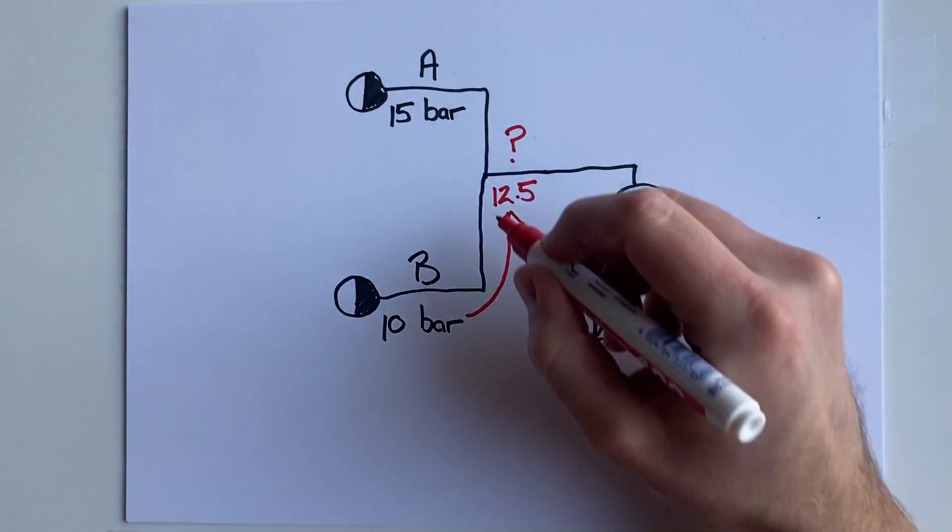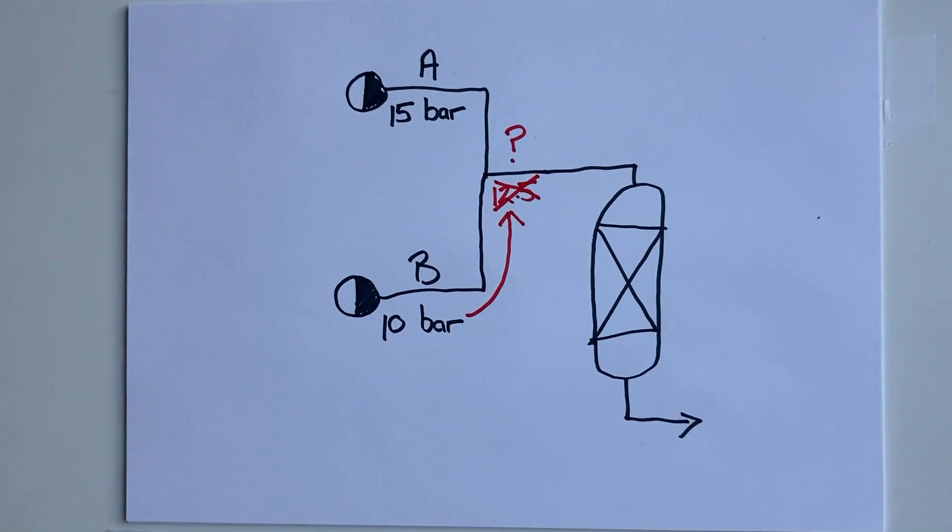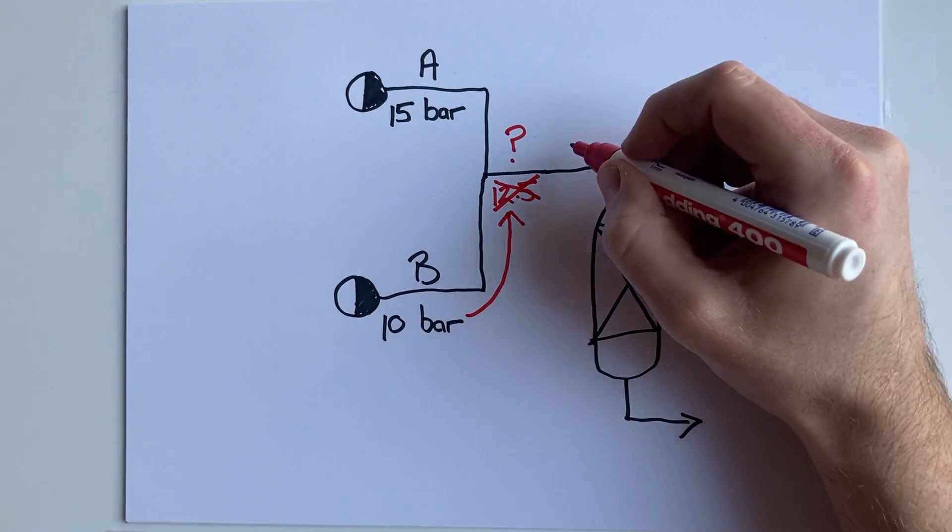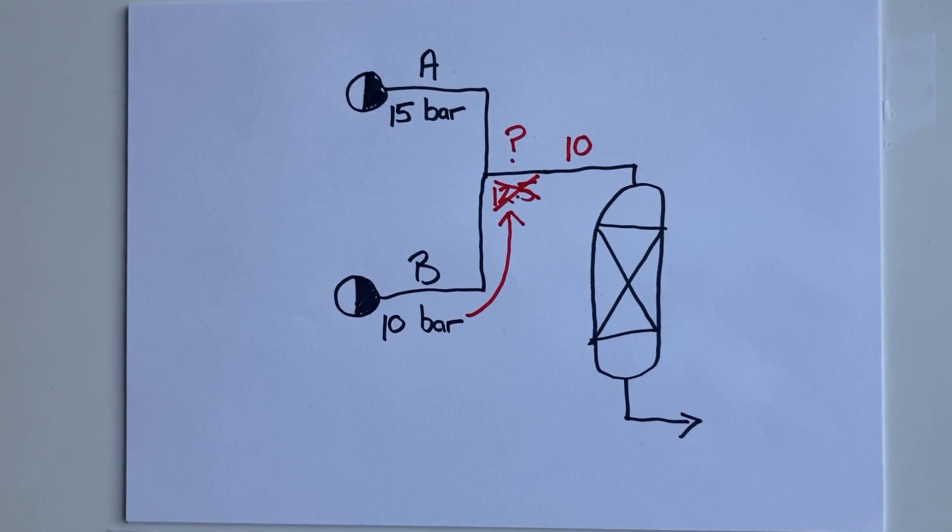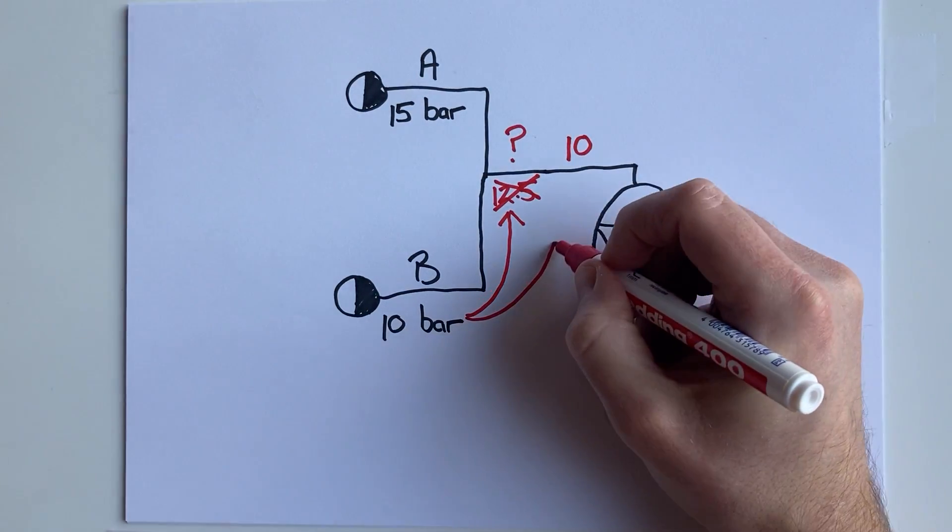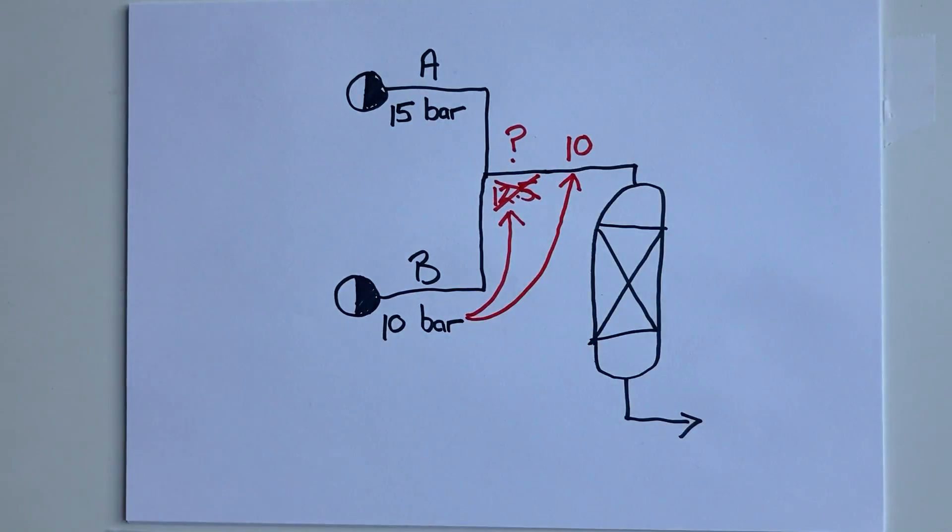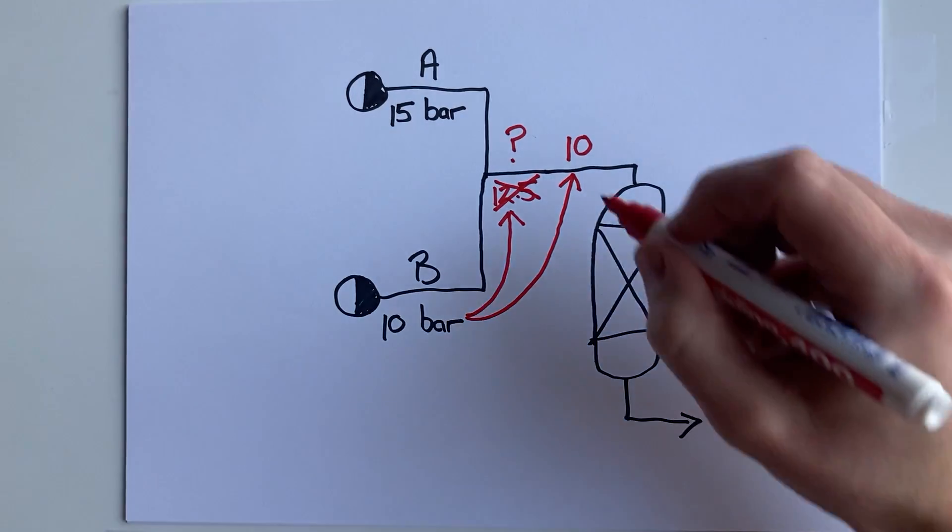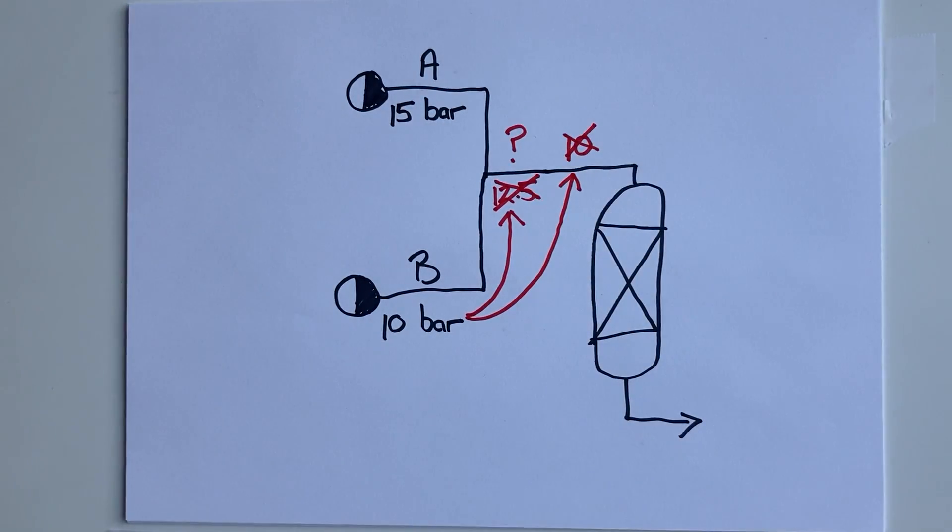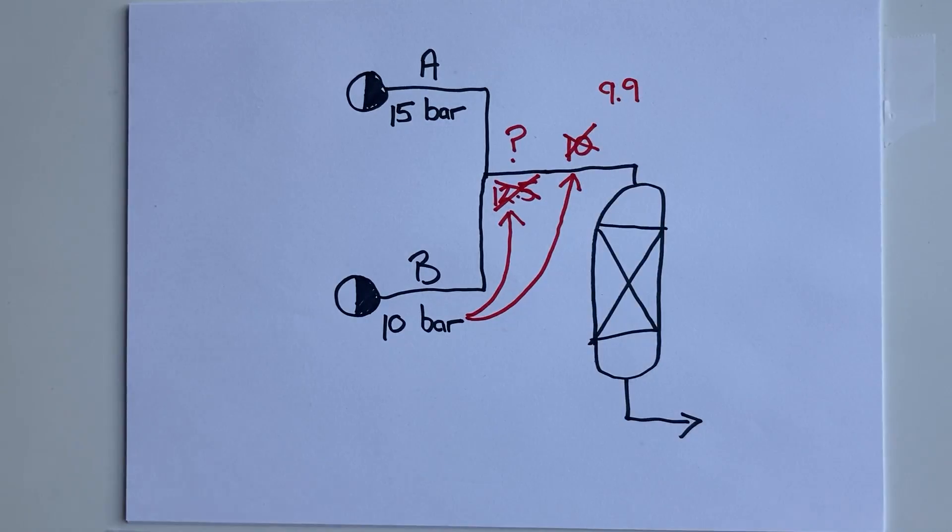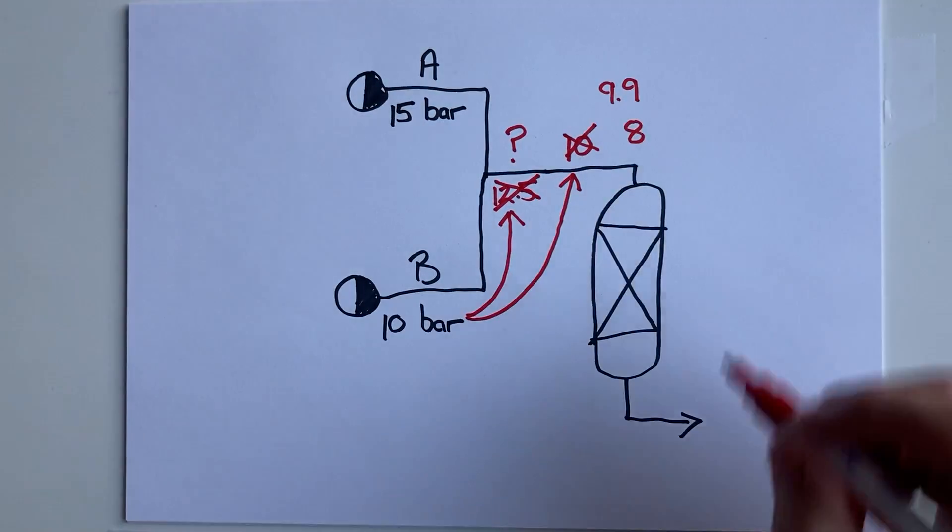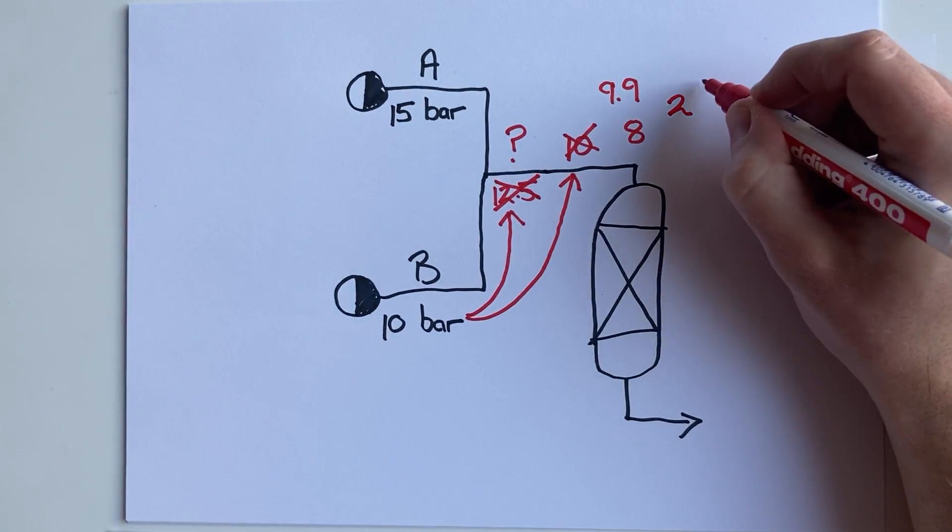But we know that things flow from a high pressure to a low pressure. If the pressure was 12.5 bar, then the 10 bar stream wouldn't flow into it. Okay, so stream A at 15 bar will flow into stream B at 10 bar, so the answer is 10 bar, right? But we hit a similar problem. Why would 10 bar flow into 10 bar? The mixing pressure needs to be lower than 10 bar for stream B to flow.